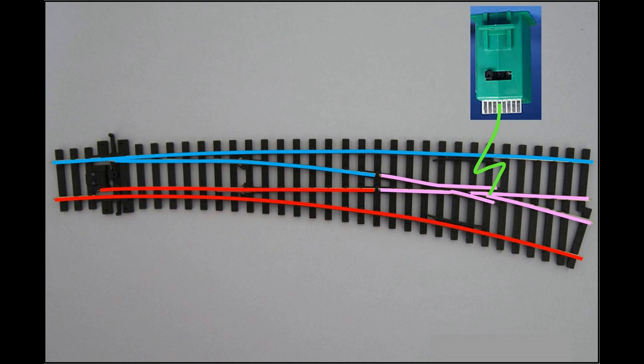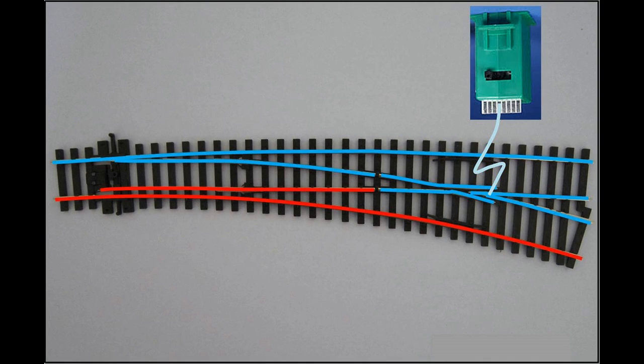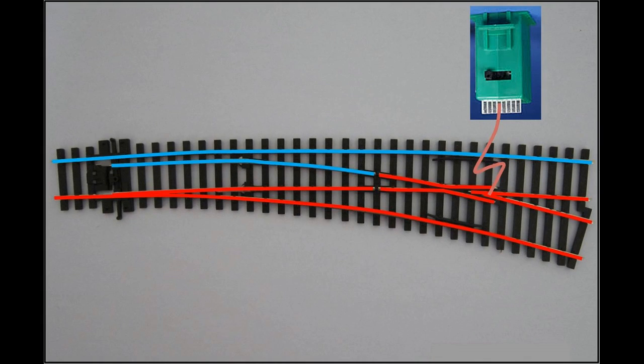So when the switchblade is against stock rail 1, the switch machine makes the polarity of the frog equal to the polarity of rail 1. And when the switchblade is against stock rail 2, the switch machine makes the polarity of the frog equal to the polarity of rail 2.